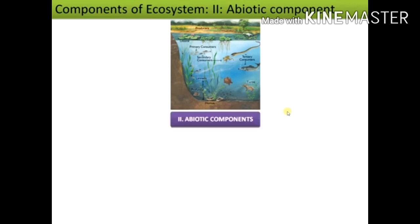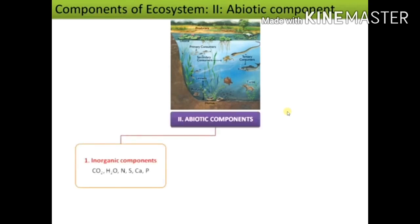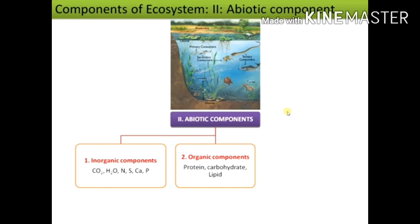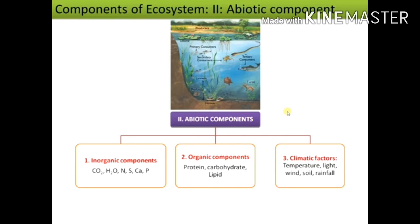Abiotic components of an ecosystem include inorganic substances like carbon dioxide, water, nitrogen, sulfur, calcium, phosphorus, etc. These also have organic components like proteins, carbohydrates, lipids, etc. Abiotic components also include climatic factors like temperature, light, wind, water, soil, and rainfall.